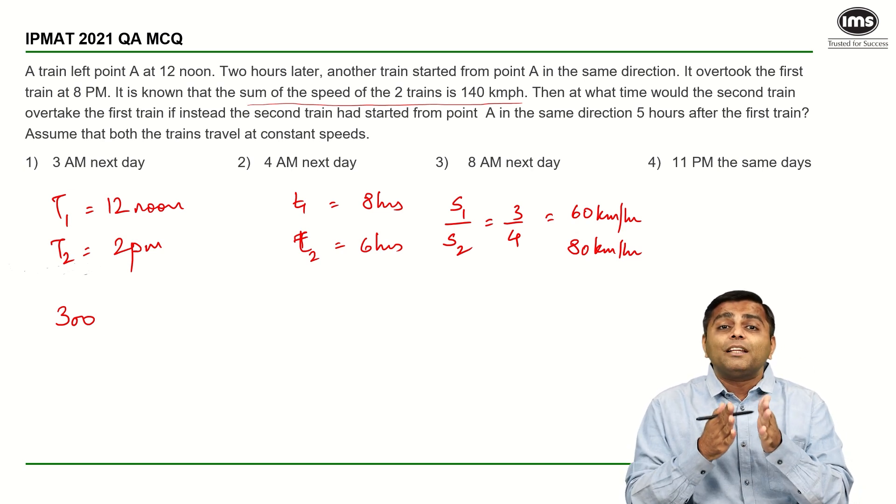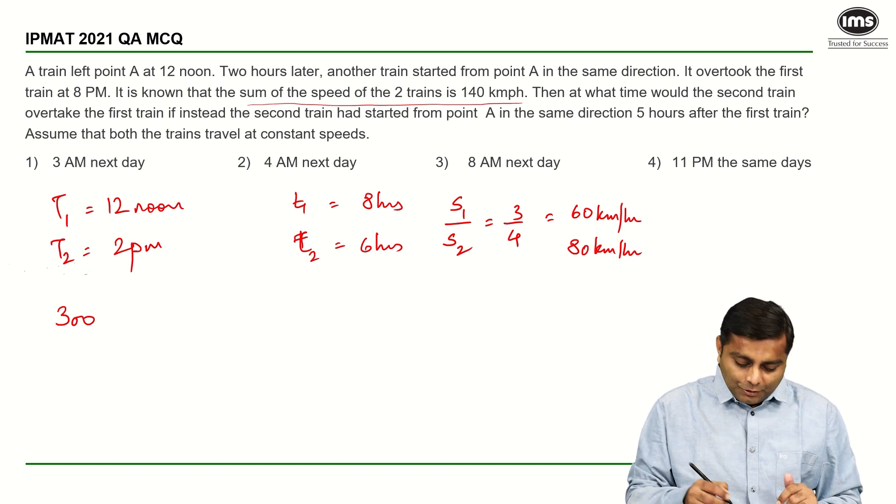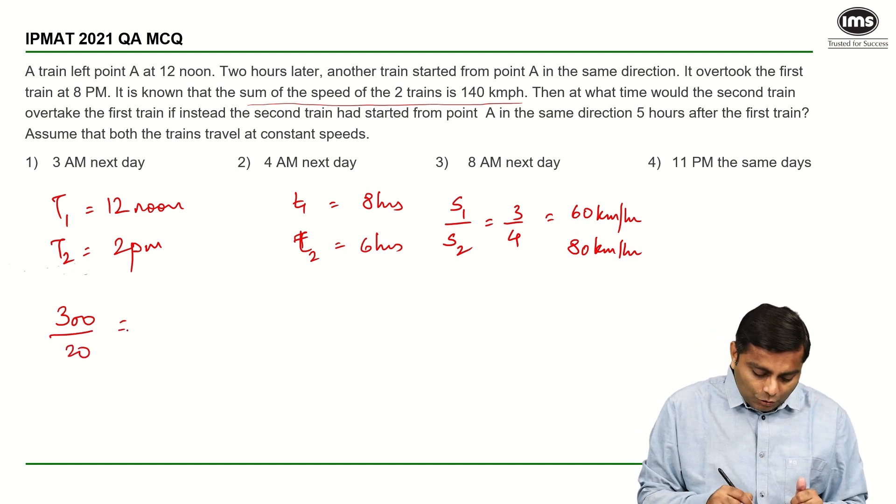300 kilometers relative distance is always covered by relative speed. Remember, relative distance is always covered by relative speed. Two objects moving in the same direction, the relative speed is subtraction of the two speeds. So, it is 80 minus 60, which is 20. This gives me 15 hours.